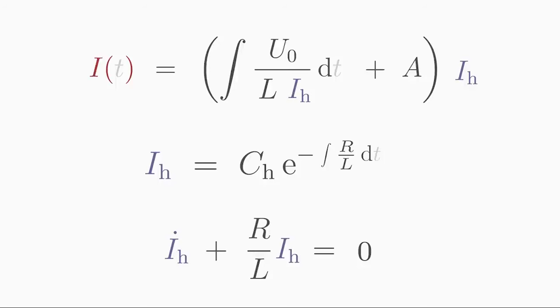So far so good. We may omit the constant CH in the solution formula here because we consider it later anyway in the constant A, which we find in the other solution formula. The coefficient R over L is constant and integrating a constant only introduces a variable T. Thus the homogeneous solution is IH equals e to the power of minus R over L times T.